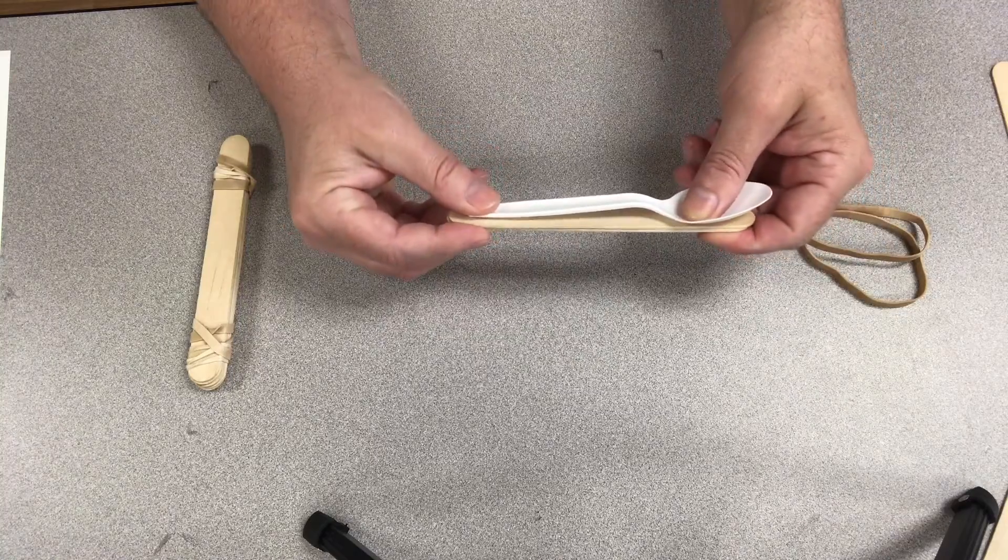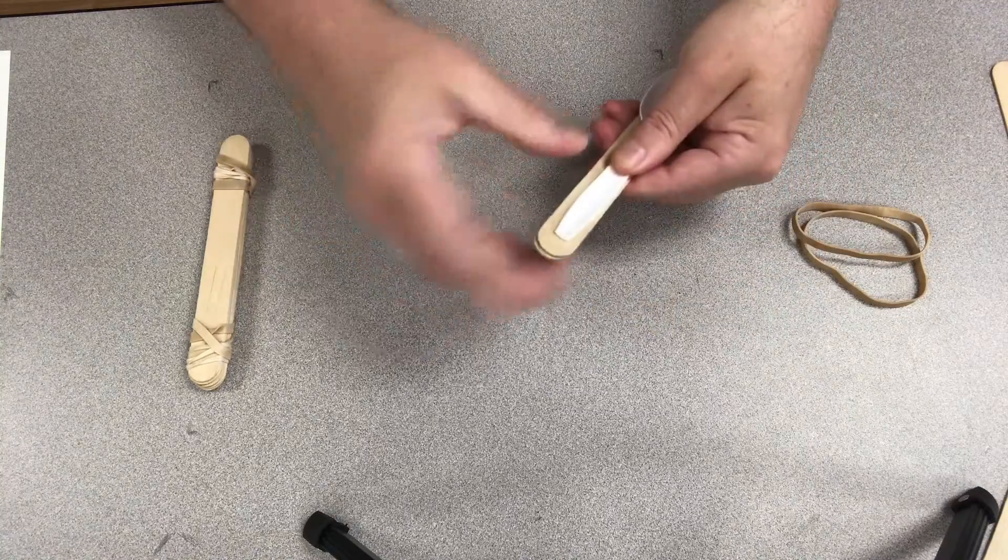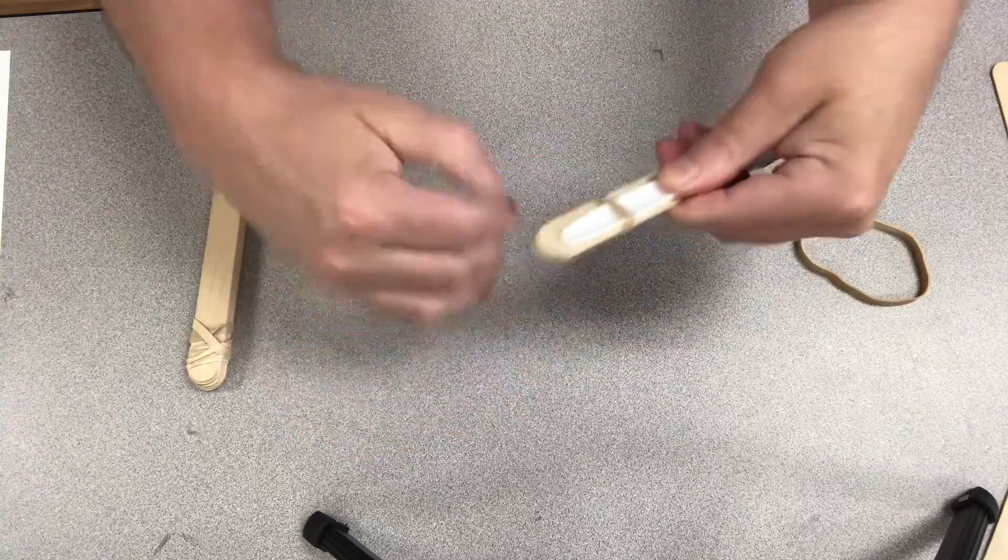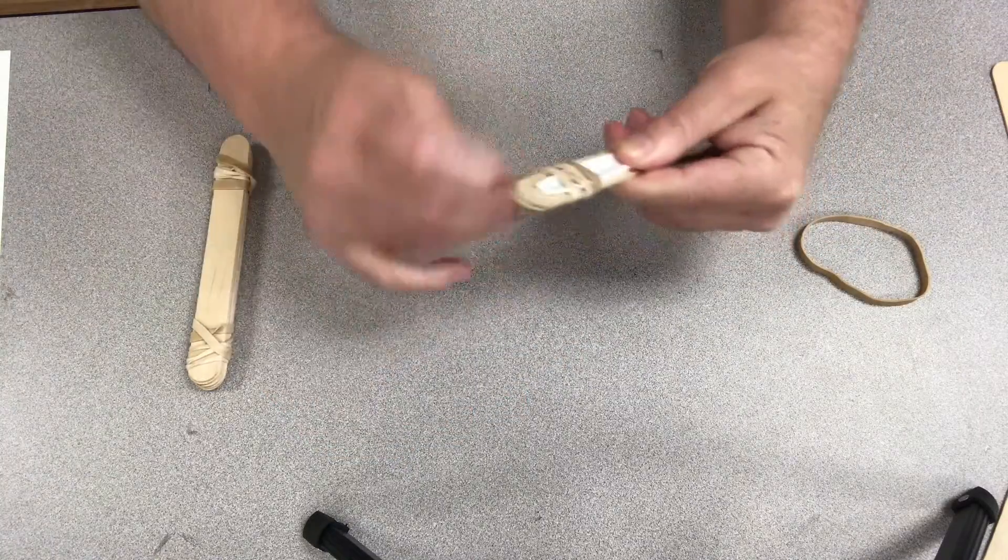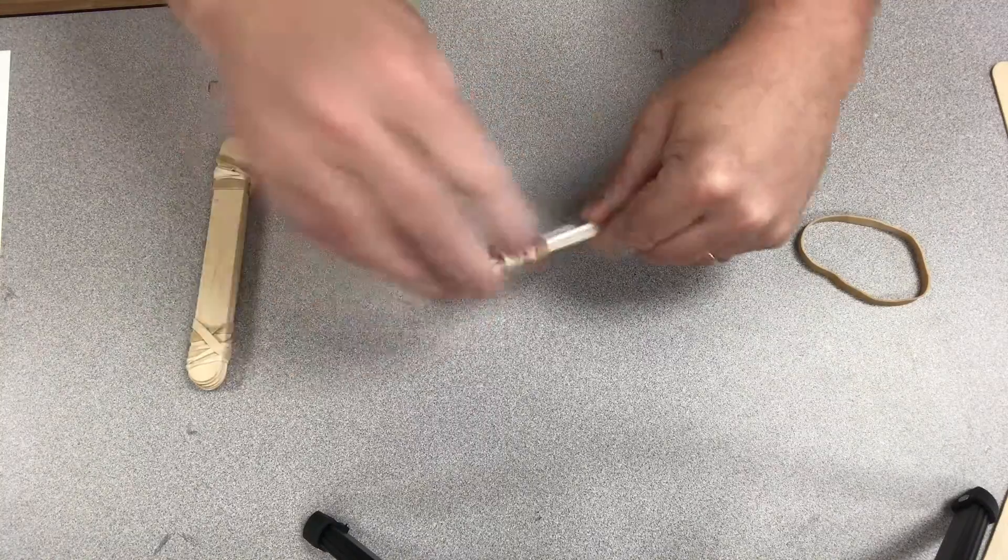Get it together there. Then we're going to hold it and take another rubber band and wrap it around everything - two sticks and the spoon at the end there, really tight. Just like that.